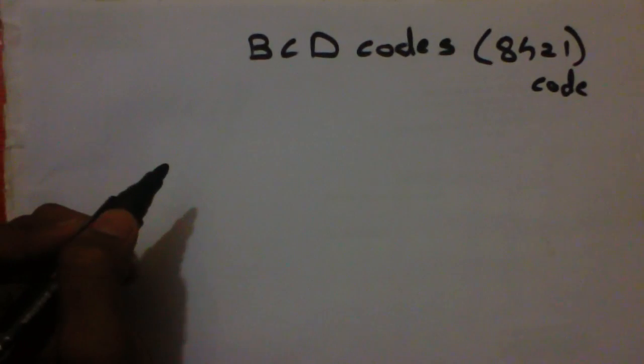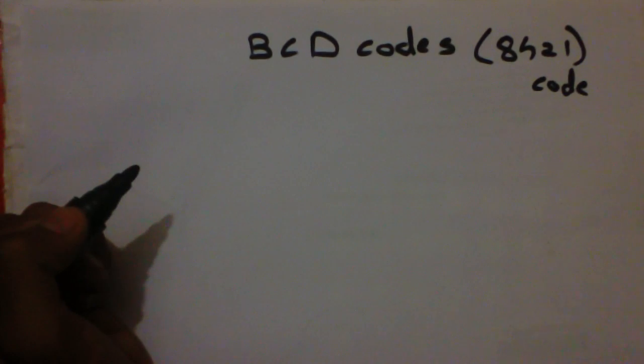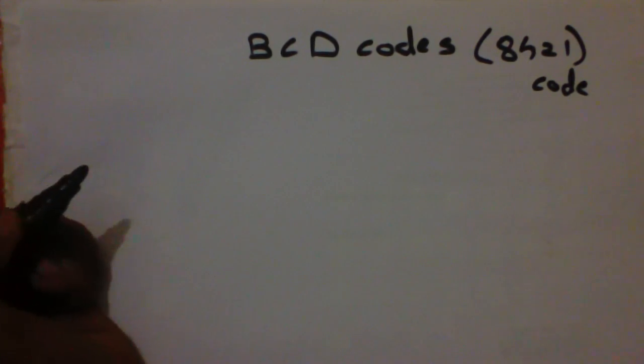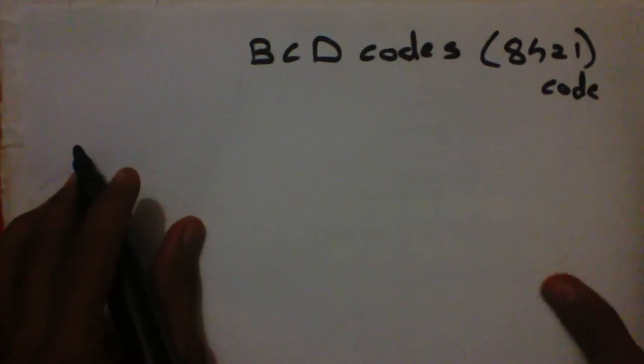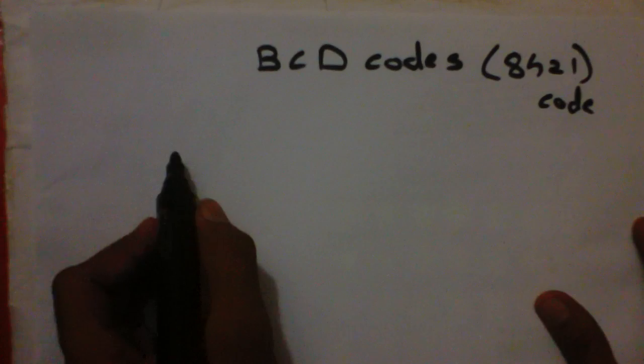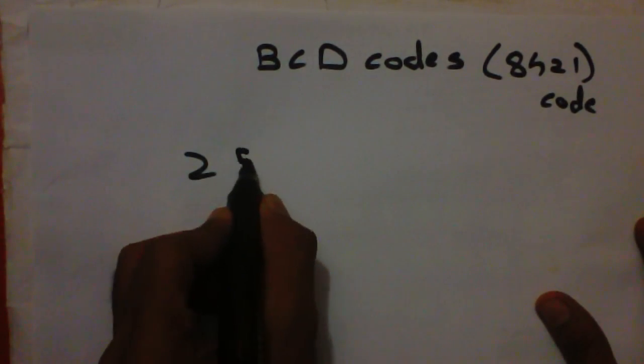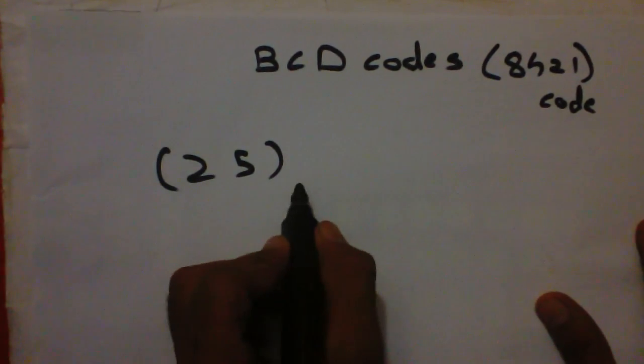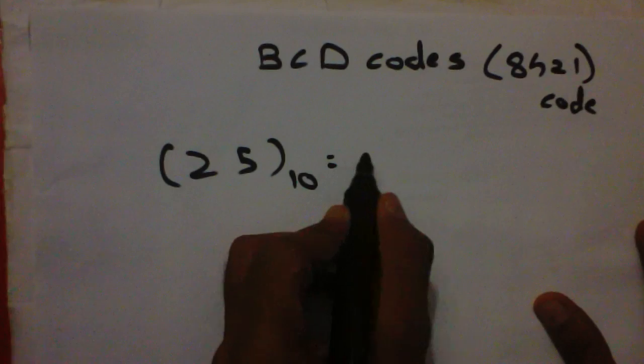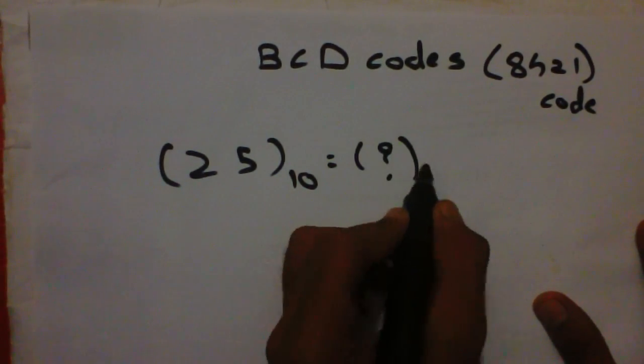So let's learn what is actually BCD Codes. BCD means Binary Coded Decimal. In BCD number, each decimal digit is converted into binary number. Let's solve this with an example. Suppose we have decimal number 25. Now what will be the BCD number of this?